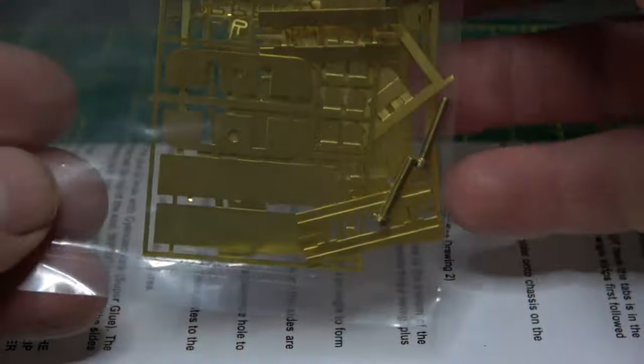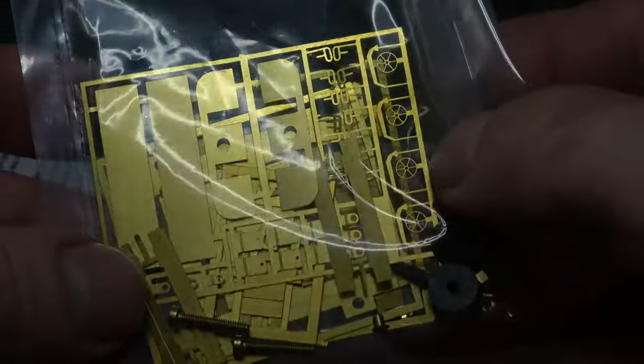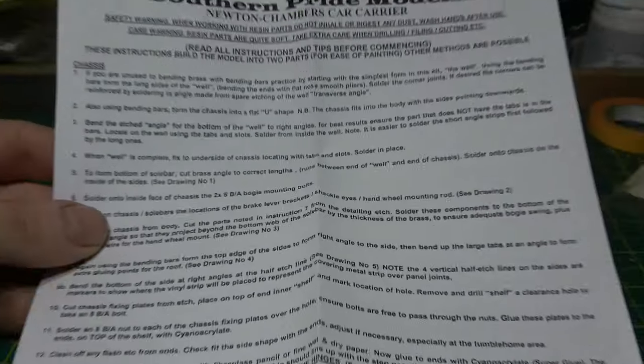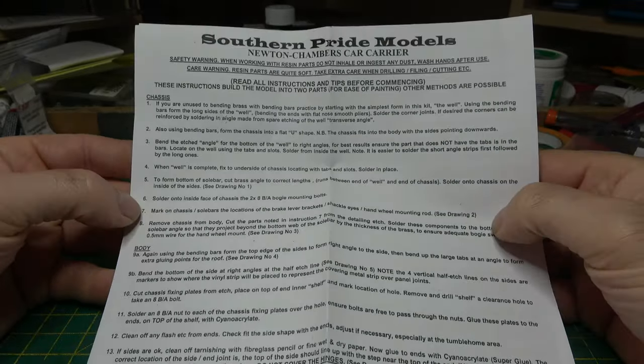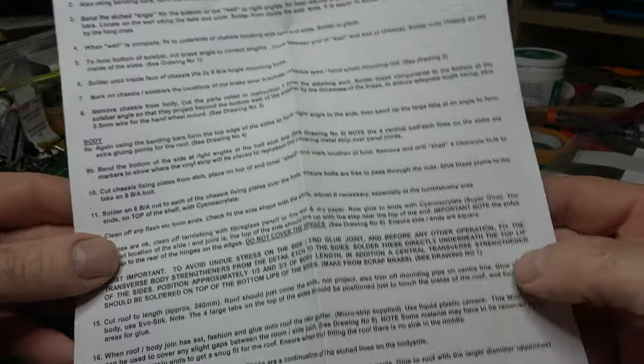And another bag containing the resin ends and bogey side frames, couplings and a few other little bits and pieces, and then there's another bag with the rest of the brass edges that will be the bogeys and fine details. And what railway project that I've done recently wouldn't be complete without written instructions, very few diagrams to go on.